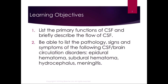Chapter 24 is on the cerebrospinal fluid — a lovely short little chapter — and hopefully this will be a lovely short lecture as well. The learning objectives: I want you to be able to list the primary functions of cerebrospinal fluid and briefly describe the flow of it — it's unidirectional. I want you to be able to list the pathology and signs and symptoms of CSF brain circulation disorders: epidural and subdural hematomas, hydrocephalus, and meningitis.